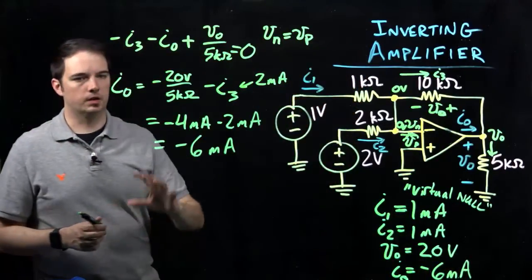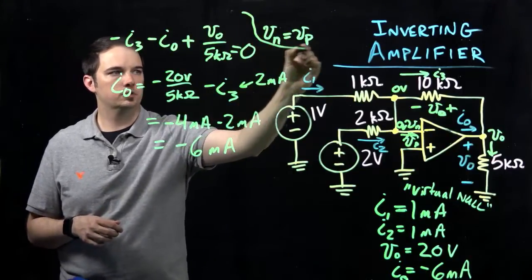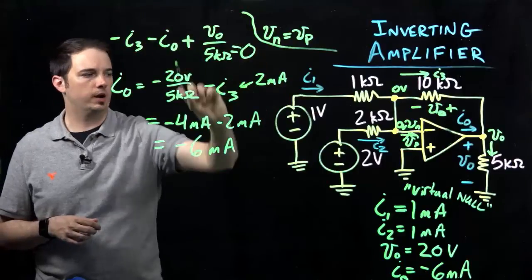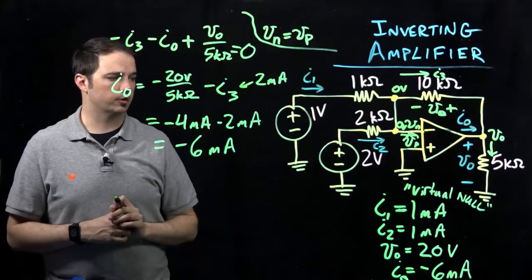This is found by writing a KCL equation at this node where we have indicated V0 specifically.